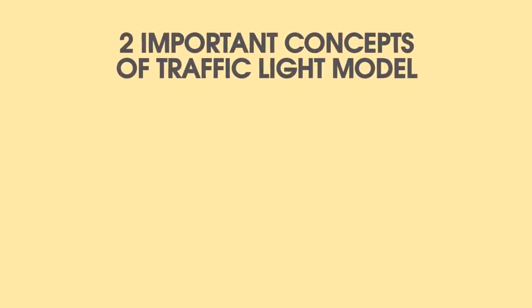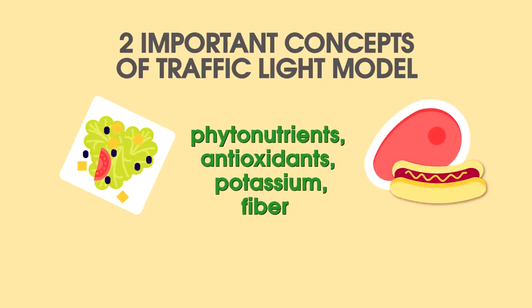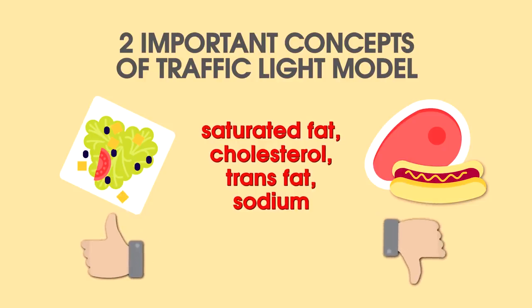My traffic light model stresses two important concepts. Plant foods tend to be healthier than animal foods, in terms of being packed with protective nutrients and fewer disease-promoting factors. And unprocessed foods tend to be healthier than processed foods.